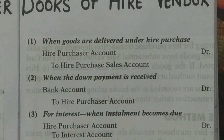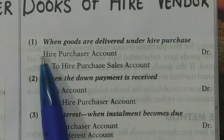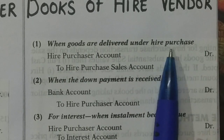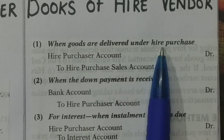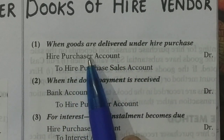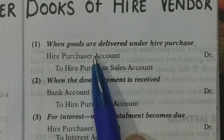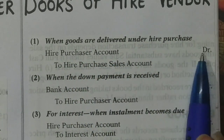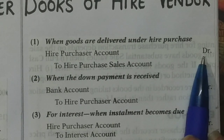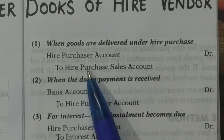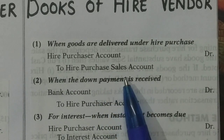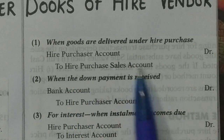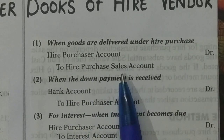Now talking about the entries in the books of the hire vendor. The very first transaction is when the goods are delivered under hire purchase. The customer to whom the goods are given becomes a debtor — debit the receiver. So: higher purchaser debited. Then to sales account, because the goods are going out and credit what goes out. So: to sales account, or to hire purchase sales account.